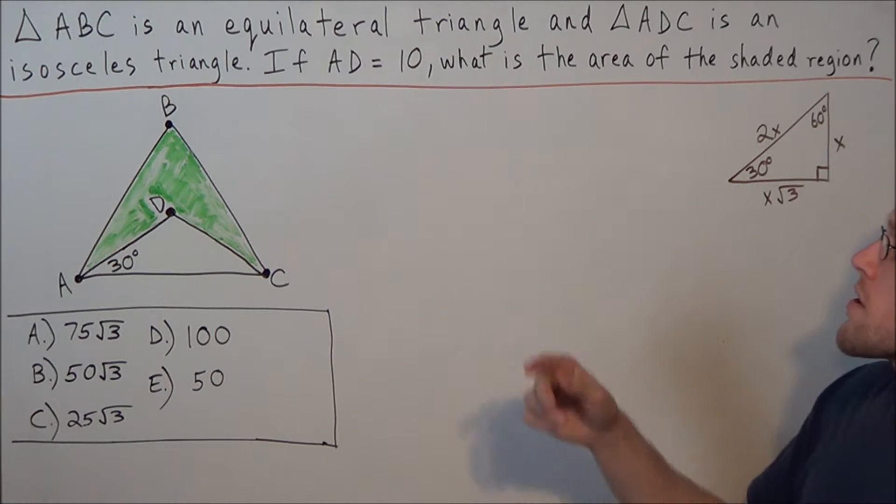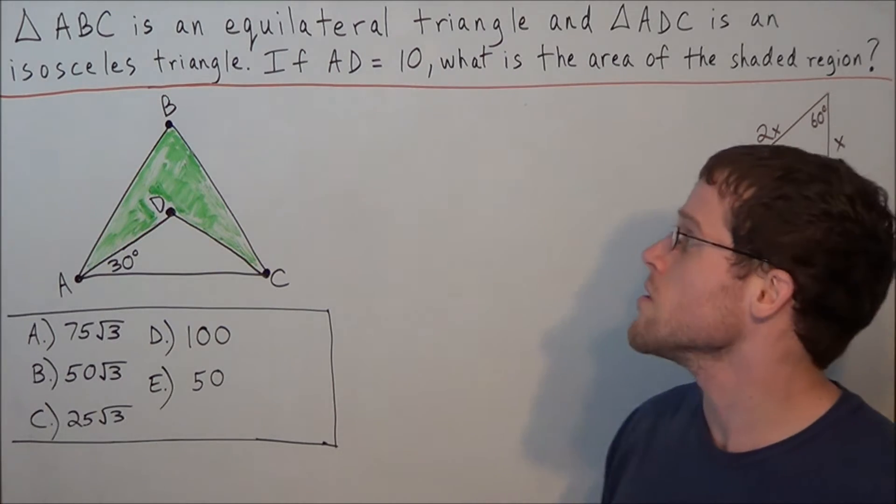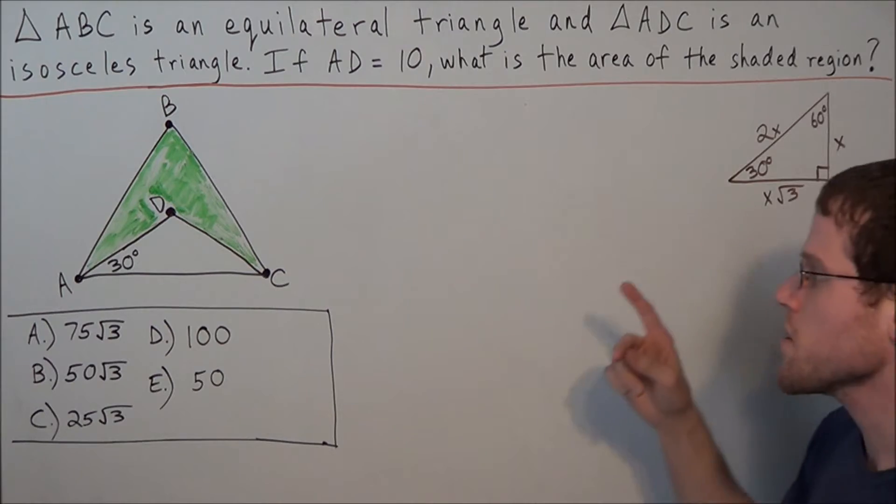Triangle ABC is an equilateral triangle, and triangle ADC is an isosceles triangle. If AD equals 10, what is the area of the shaded region?